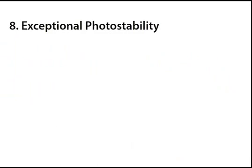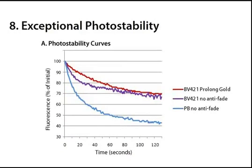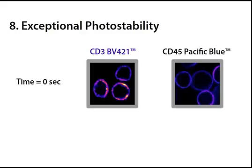Photostability is critical for microscopy applications. Photostability curves reveal that BV421 loss in fluorescence from photobleaching is significantly less than that of Pacific Blue. Additionally, the BV421 starting signal is much brighter than that of Pacific Blue.